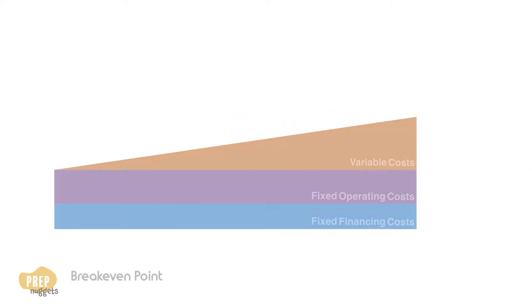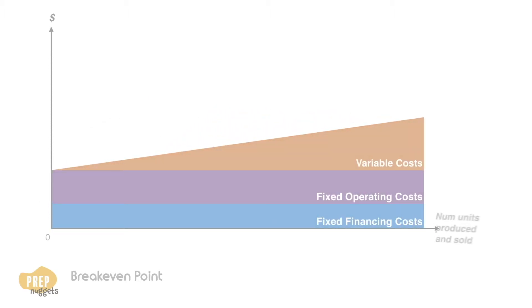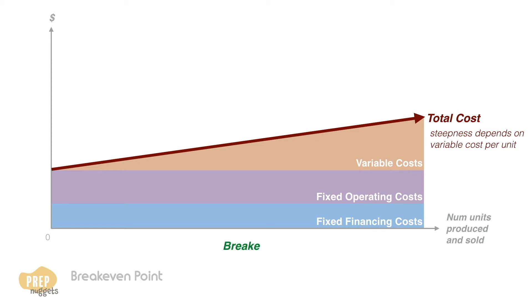If we plot a firm's total costs against the number of units it produced and sold, we get this upward-sloping straight line where the steepness is determined by the variable cost per unit. The higher the variable cost, the steeper the line. The break-even point is the number of units a firm needs to produce and sell in order to fully cover all of its variable and fixed costs.